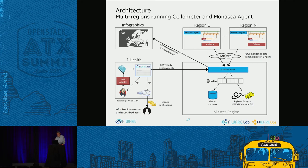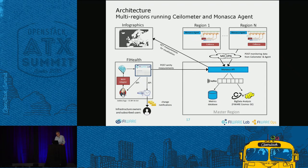The high-level architecture of the monitoring system has each region equipped with a Monasca agent, Ceilometer, and Ceilosca. Through the MDVPN, data is provided from remote regions to the central region where Monasca is installed along with the Monasca API. Data passes from the Monasca API to a Kafka queue and then to the metrics database - in this case, InfluxDB.